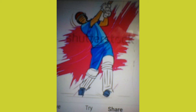8. Out: bowled, caught, run out, LBW, and stumped are the most common ways of getting out. When a batsman gets out, it gives the opportunity to the next person in the batting order.